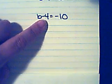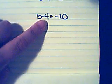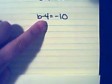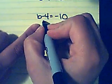To get b by itself I need to get rid of this minus four. To get rid of a minus four I have to do the opposite of subtraction, which is addition. So I need to add four.